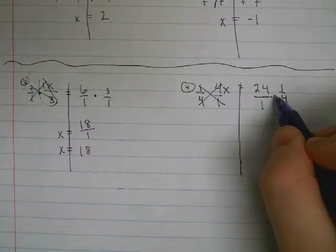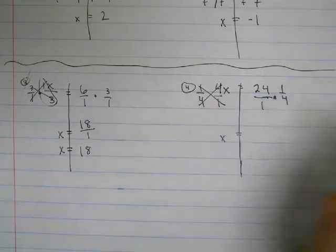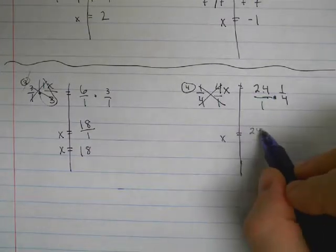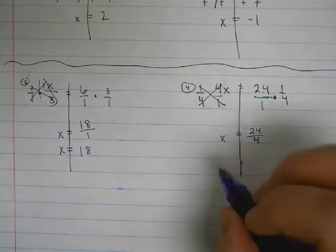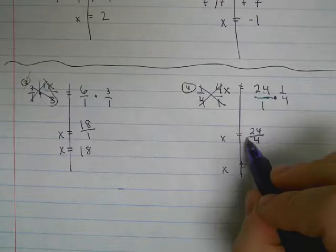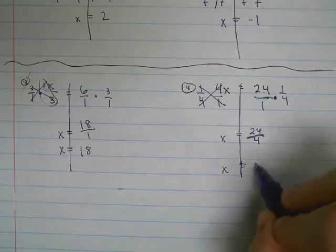So we multiply our fractions together and we'll get x equals 24 over 4. Simplifying, the fraction bar means division. 24 divided by 4 is 6.